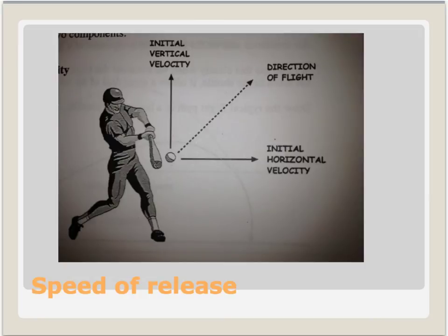Speed of release is divided into two components: initial vertical velocity and initial horizontal velocity. A higher initial vertical velocity will result in a longer flight caused by more height. A higher initial horizontal velocity will result in a longer flight time and better distance. Pause the video now and name two sports, one suited to a higher initial vertical velocity and one suited to a higher initial horizontal velocity.